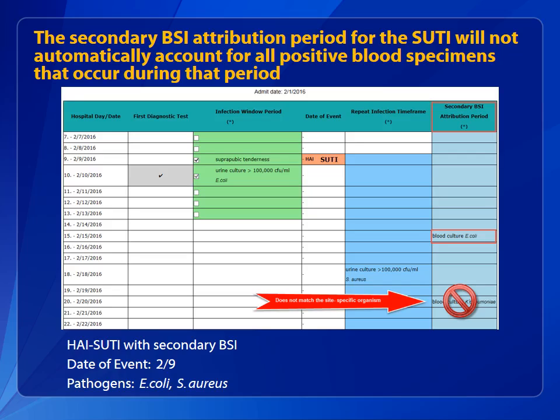Therefore, the blood culture growing Klebsiella pneumoniae, which does not have a matching organism to the urine culture, cannot be attributed as a secondary BSI to the SUTI. This BSI must be evaluated to determine if it's secondary to another site of infection or if it's a primary BSI — it could possibly be a central line-associated bloodstream infection.